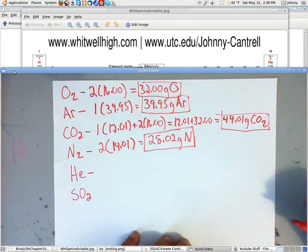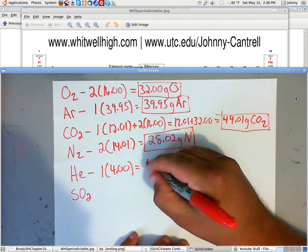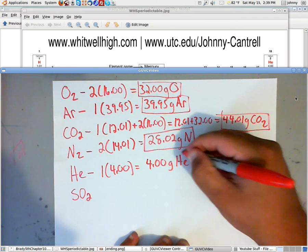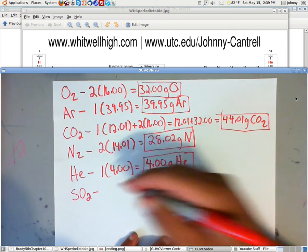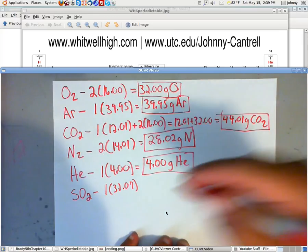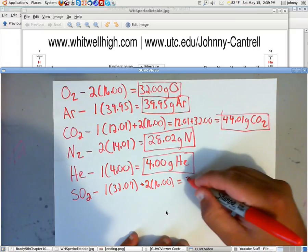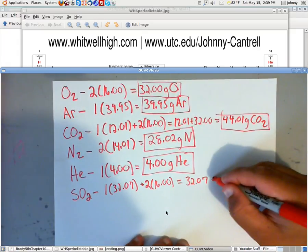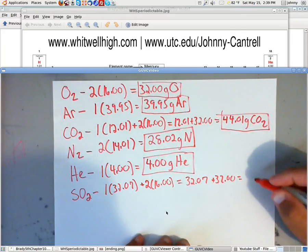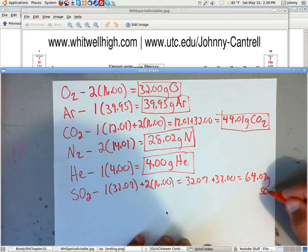Now, helium. That's the easy one. Helium is four. We've only got one of those. So basically, that tells us that helium is 4.00 grams of helium. And sulfur, if you look at it on the periodic table, sulfur is 32.07. But we also have two oxygens. So we have 32.07 plus 32. So we end up having 64.07 grams of SO2.